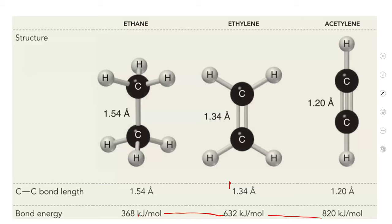Would having two pi bonds increase the energy of the sigma bond through more overlap? Maybe a little - bringing them closer together gives better sigma bond overlap but also increases repulsion between the two carbon nuclei, which offsets it. The second pi bond energy is about 188 kJ/mol - a bit less than the first one at 264 kJ/mol - probably because you're forcing them closer together for the second pi bond, increasing nuclear repulsion.